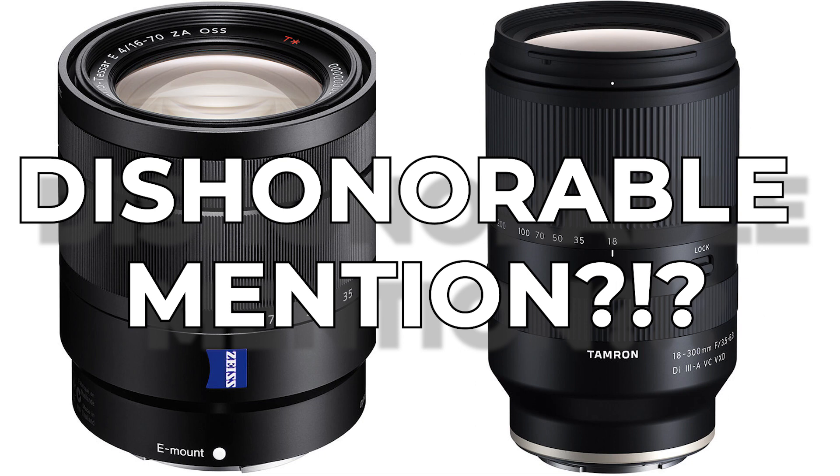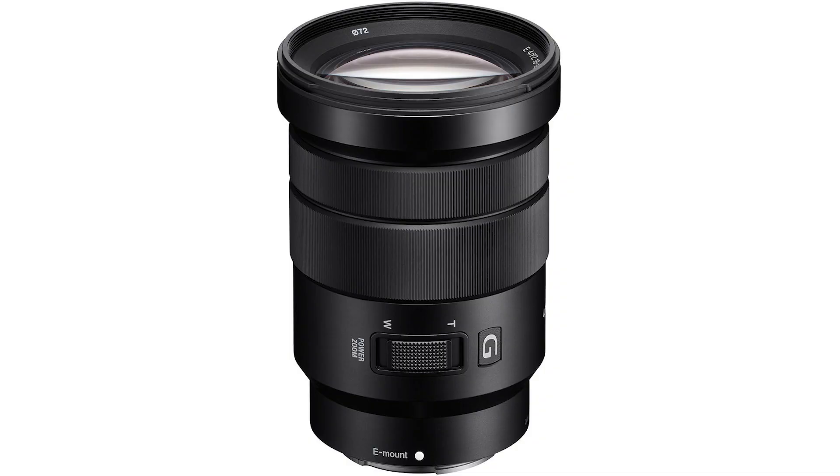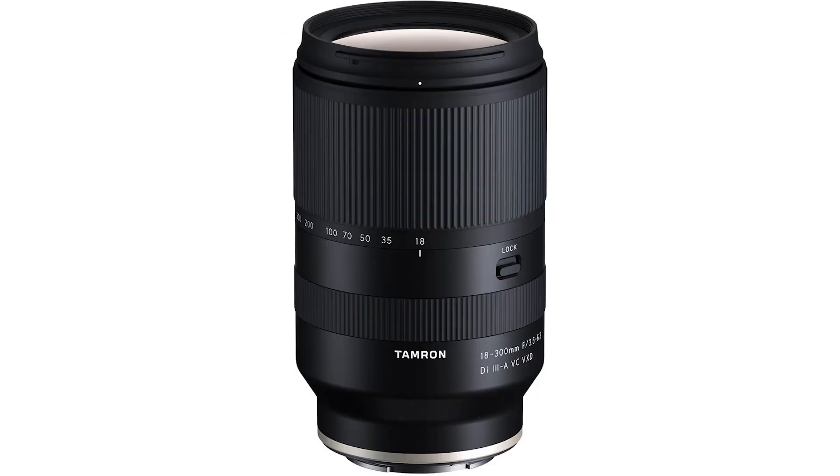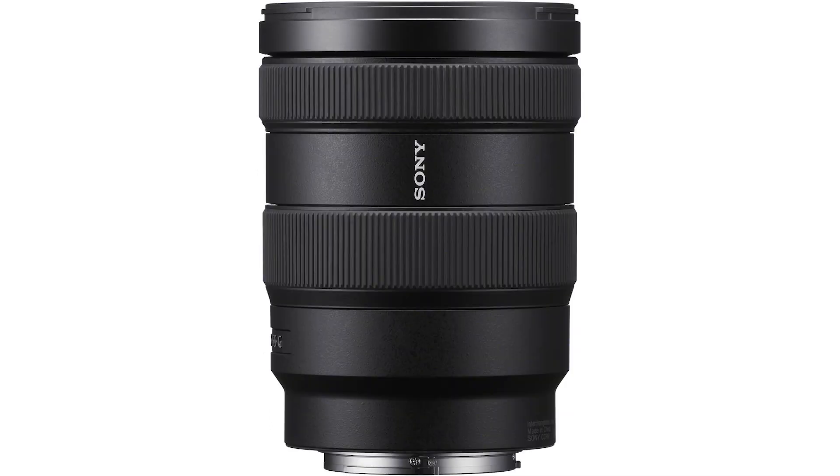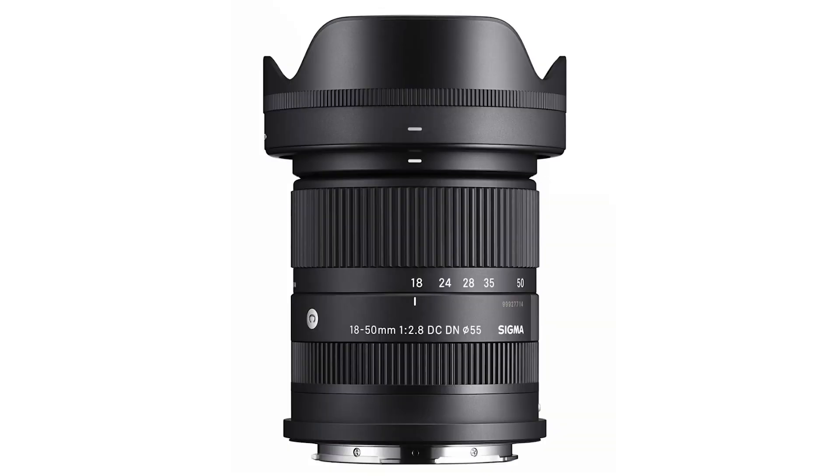Let's talk about lenses I didn't recommend — you could call them dishonorable mentions. People from Facebook groups and other blogs would recommend the 18-105 f4, the 18-135 kit lens, the Tamron 18-300, the Zeiss 16-70 f4, and the Sony G 16-55 2.8. I wouldn't recommend these because Tamron and Sigma pretty much outclass the 18-105 f4. One thing I hate about the 18-105 is that it resets to 18mm each time you go into camera settings or turn off the camera, which is annoying especially for a photo shoot.